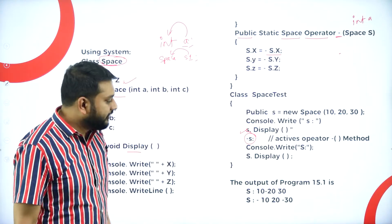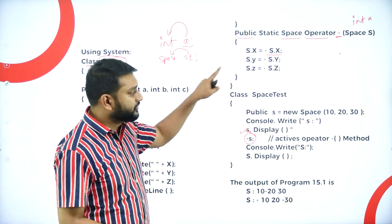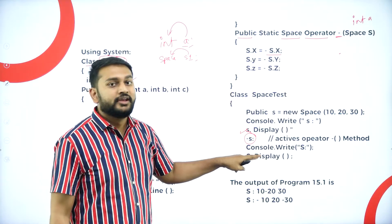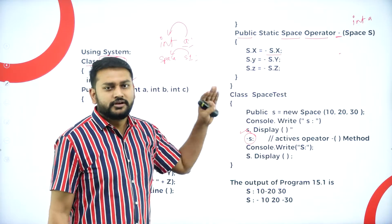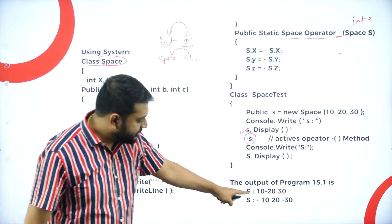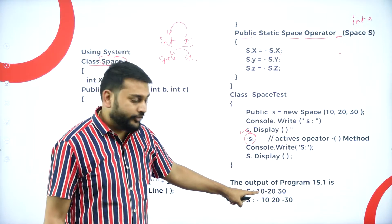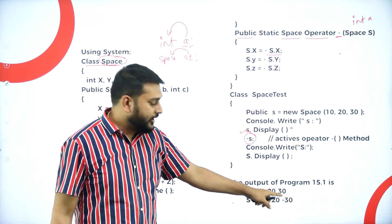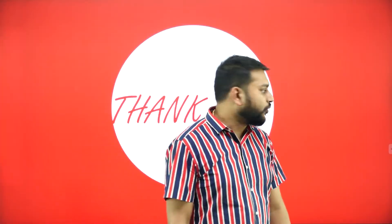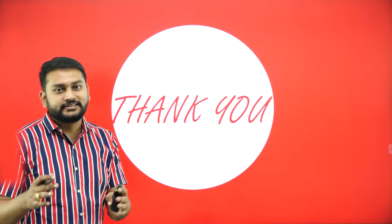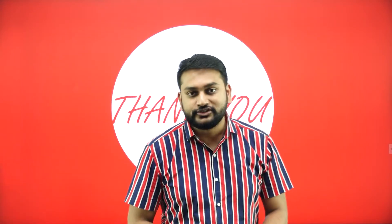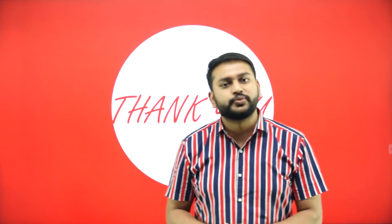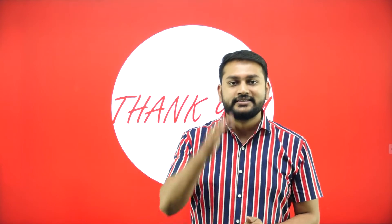After performing this operator overloading, I will print the values again with S.display. Observe: you had 10, it's changed to minus 10. You had minus 20, it's changed to plus 20. You had 30, it's changed to minus 30. This is how operator overloading is happening. I hope you understood the concept of operator overloading, and I'll be seeing you in the next class with more concepts on operator overloading. Take care, bye-bye.